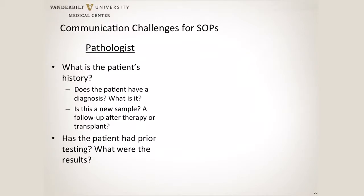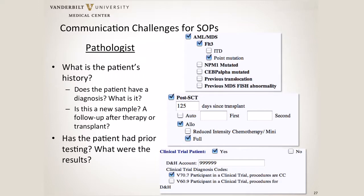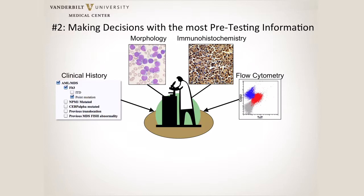To make these decisions, we have to know at which stage the patient is. Part of that is getting good history — does the patient have a known diagnosis, what is it, is this a follow-up or new sample, have they had prior testing and what were the results? We've developed a hematopathology testing form tied to our EMR. The nurse practitioner or fellow ordering the bone marrow study can open it up, click on the diagnosis, and a bunch of different molecular and genetic changes will pop up for them to select. They can tell us the stage, what treatment they've had, whether they're post-transplant, what they're worried about, and whether the patient is on a clinical trial — which may affect reimbursement and the tests we need to do.